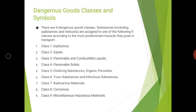The classification is into nine categories, from class 1 to class 9. Class 1 are explosives, class 2 gases, class 3 flammable and combustible liquids, class 4 flammable solids, class 5 oxidizing substances and organic peroxides, class 6 toxic and infectious substances, class 7 radioactive materials, class 8 corrosives, and class 9 miscellaneous hazardous materials — those not included in the previous classes.